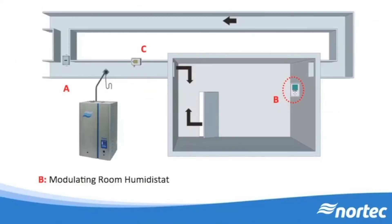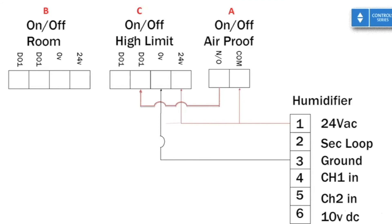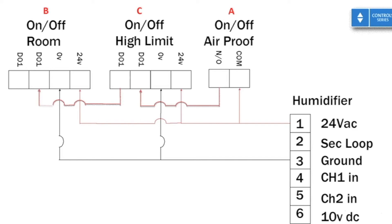The on-off room humidistat requires power and ground from the humidifier. We tap off the same 24 volt AC supply as the previous high limit and wire to the respective terminals on the humidistat, doing the same with the ground. The conductor from the on-off high limit is used as the incoming signal to this humidistat's relay. As long as both the air proving switch and the high limit complete the loop, the signal can be relayed to the humidifier security loop should there be a need for humidification. The relay output goes to the humidifier security loop, pin 2.